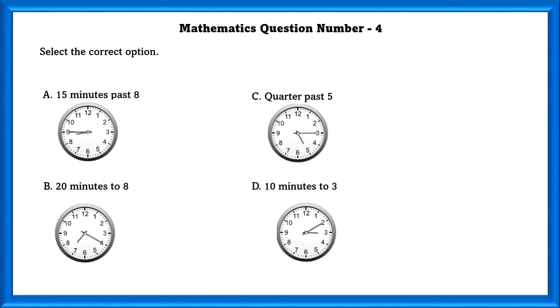Mathematics Question Number 4: Select the correct option. A. The clock showing is 15 minutes past 8. No, it is showing 8.45, which is not 15 minutes past by 8. B. 20 minutes to 8. No, it is 7.20 and there is 40 minutes to 8. C. Quarter past 5. Yes, 5.15 is showing. That is the correct answer.